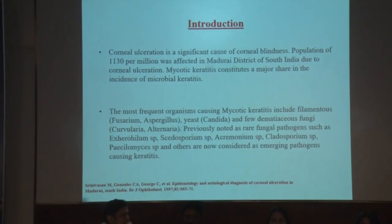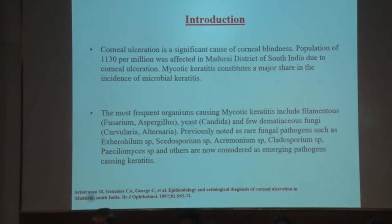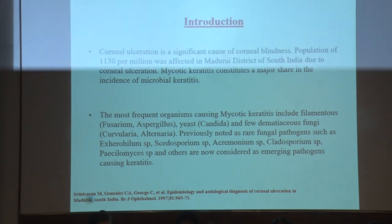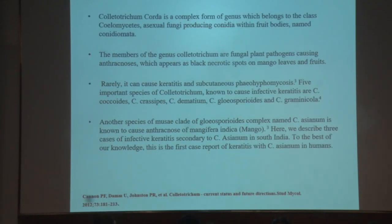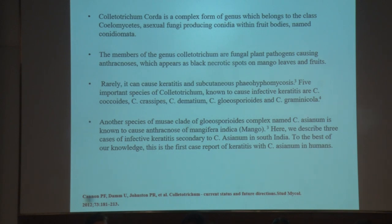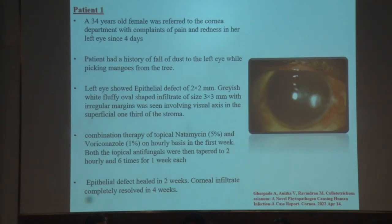Dr. Aditya presented on Colletotrichum asianum, a phytopathogenic fungus causing keratitis. Corneal ulceration is a significant cause of corneal blindness, with 11–30 million per million affected in south India. Mycotic keratitis constitutes a major share, predominantly from filamentous fungi like Fusarium and Aspergillus, dematiaceous fungi, and increasingly rare pathogens like Exserohilum and Curvularia. Colletotrichum is a complex genus of plant pathogens causing anthracnose, appearing as black necrotic spots on mango leaves and fruits. Three cases of infective keratitis secondary to Colletotrichum asianum in southern India were described. The first case was a 34-year-old female who had dust fall into her left eye while picking mangoes.